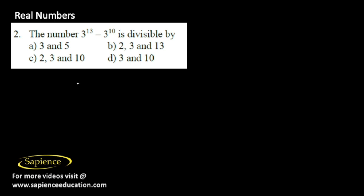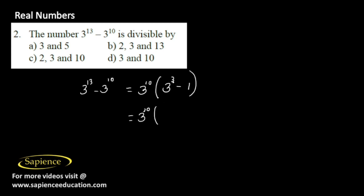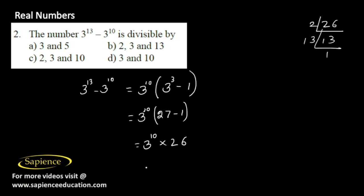The number 3 to the power 13 minus 3 to the power 10 is divisible by what? Take 3 to the power 10 common: 3 to the power 10 into (3 cubed minus 1), which is 3 to the power 10 into 26. 26 can be prime factorized as 2 into 13. So the given number is 3 to the power 10 into 2 into 13, having prime factors 2, 3, and 13. Option B is the correct answer.